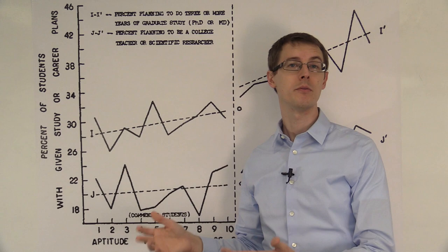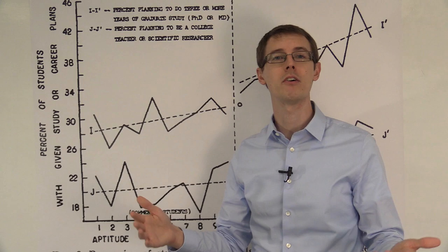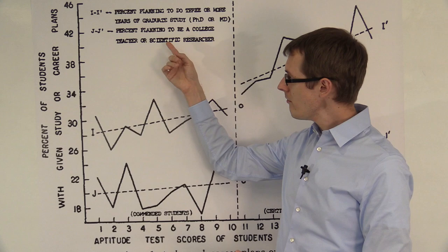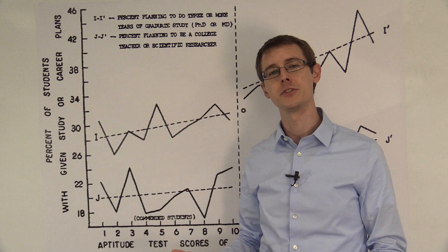There's no variation, so it's not an interesting outcome to try to explain, at least for this sample. So instead, that's why they look at will you go on to graduate school, or are you interested in being a scientific researcher or a college teacher?